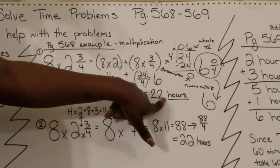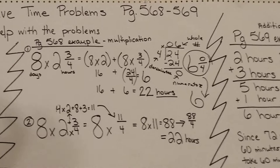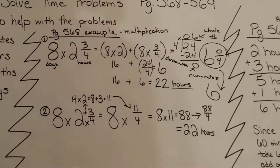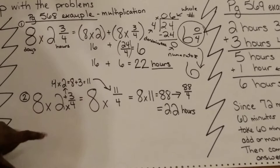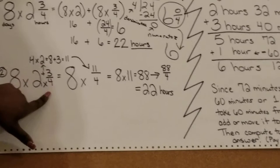Now I'm going to go back to my second method and see if my answers are the same, which they should be. My first step would be to change your mixed number into an improper fraction.